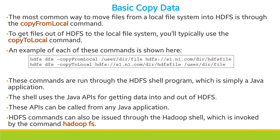We have to use some interfaces or APIs. One of the API commands to move files from a local system into HDFS is by using the copyFromLocal command. To get files out of the HDFS file system you use the copyToLocal command. The command syntax is: hdfs dfs -copyFromLocal [file path] and hdfs dfs -copyToLocal [file path].